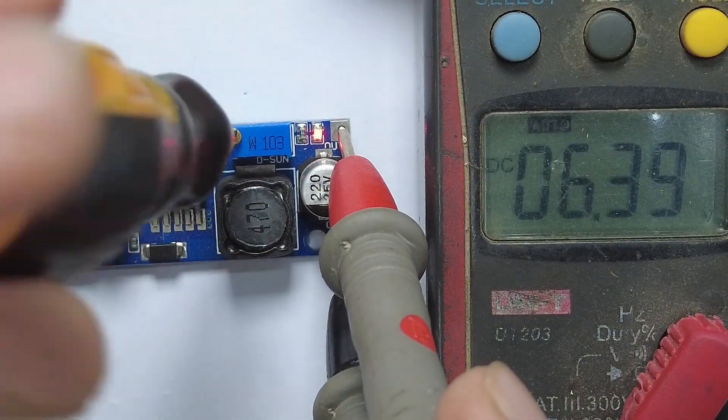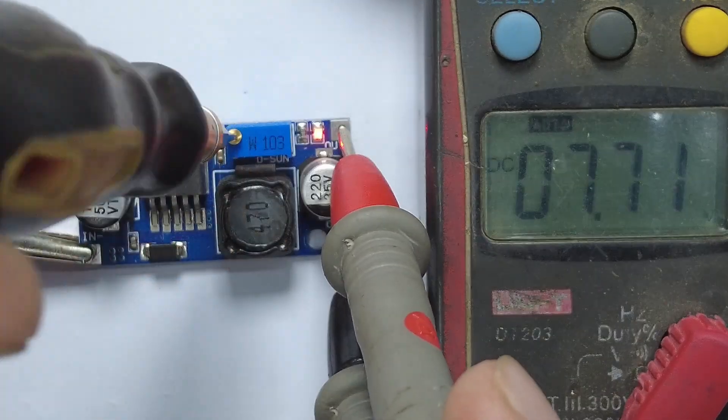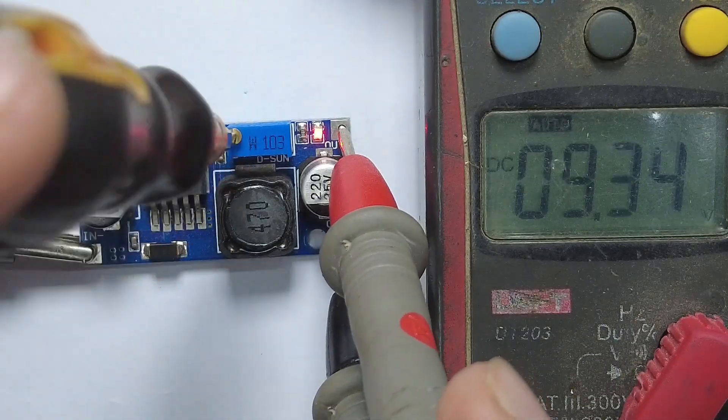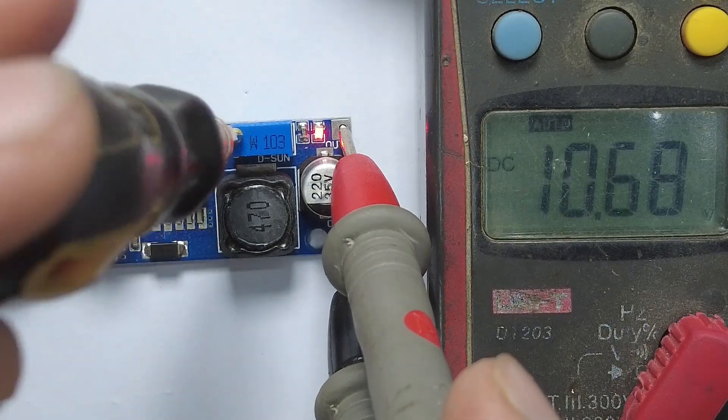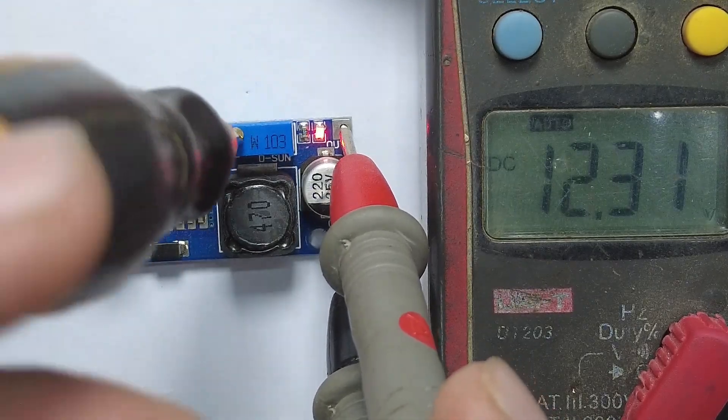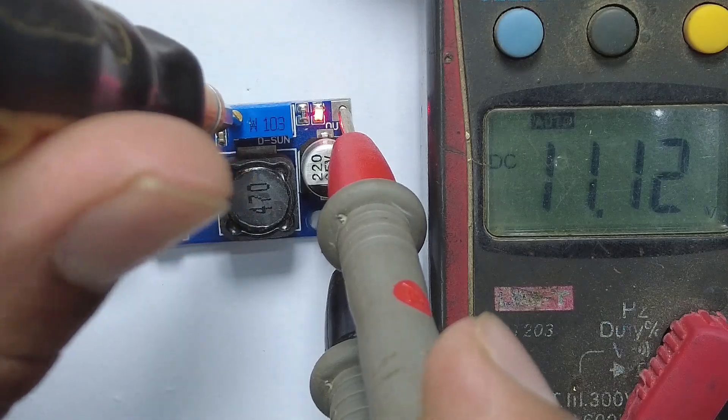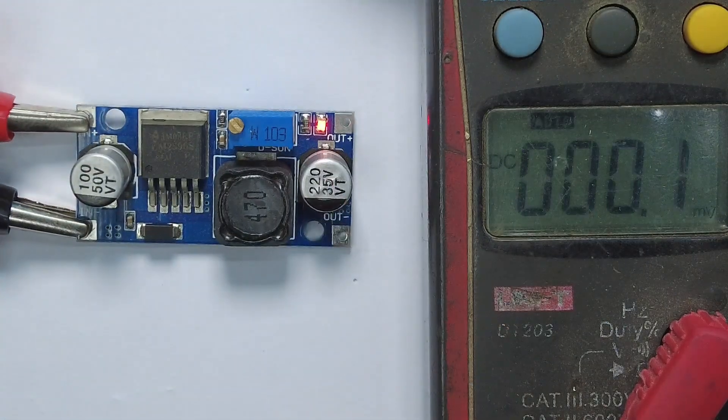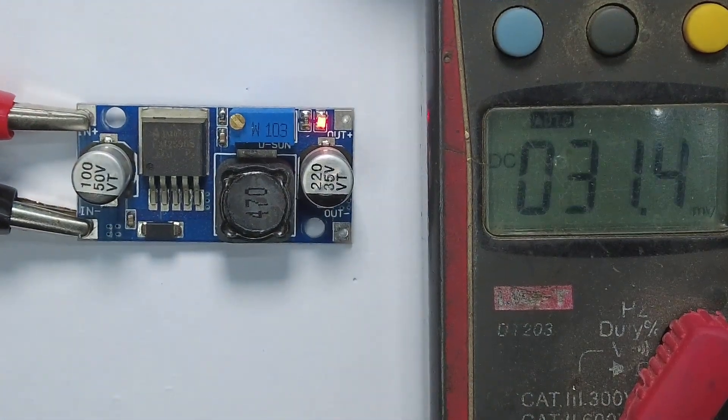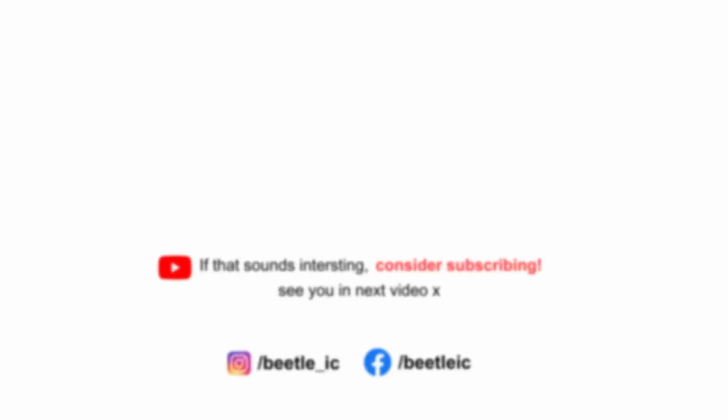Here are two tips for you. First, if your load is more than 2 amperes, you should use a heat sink. Second, before connecting your load, please set the desired voltage you want. Thanks for watching, see you in the next video.